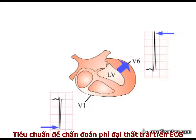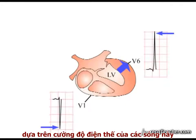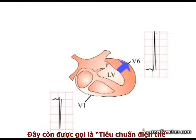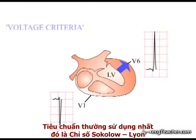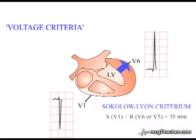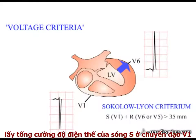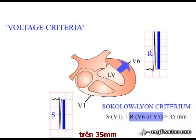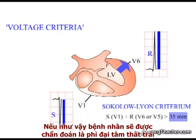Criteria to diagnose left ventricular hypertrophy from the ECG, based on the magnitude of these deflections, have been developed. These are the so-called voltage criteria, the best known of which is the Sokolow-Lyon criterion. This states that if the sum of the depth of the S wave in lead V1 and the height of the R wave in lead V5 or V6 — whichever is the taller — is greater than 35 mm, the patient has left ventricular hypertrophy.